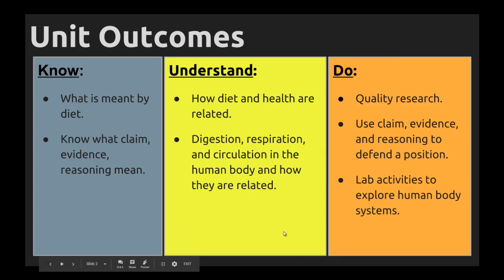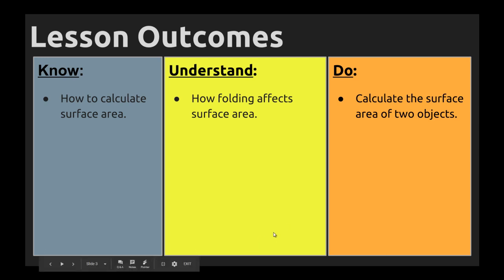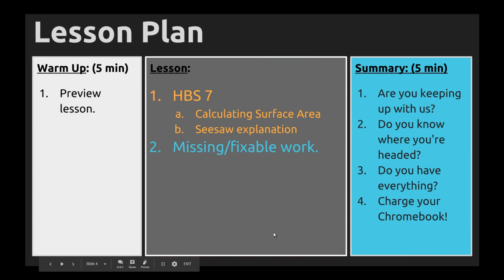Our unit outcomes are still the same: diet and nutrition. We're going to look at surface area — how to calculate surface area, how folding affects surface area, and you're going to be calculating surface area in class. HBS lesson 7 is around the small intestine. We're going to take a slightly different version than what's in the book and work at calculating the surface area of the model that we had and compare it to the actual surface area of your small intestine.